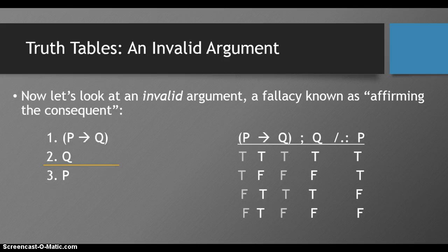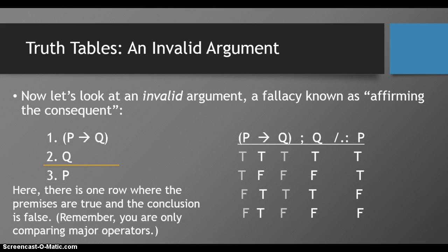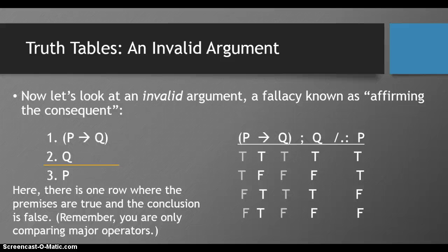Once we construct our truth table, we can see that in fact there is one row where the premises are true and the conclusion is false. Now remember, you're only comparing major operators. So we're only comparing the column under the conditional, the column under Q, and the column under P. The grade columns under P and Q in the conditional are what combine to give us the truth value column under the conditional. So we're only paying attention to the major operators.